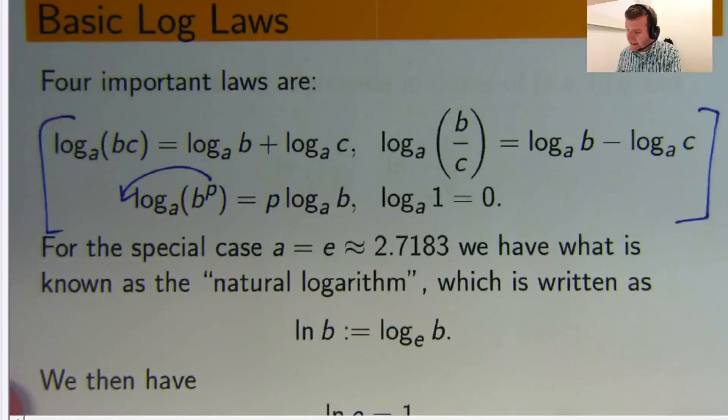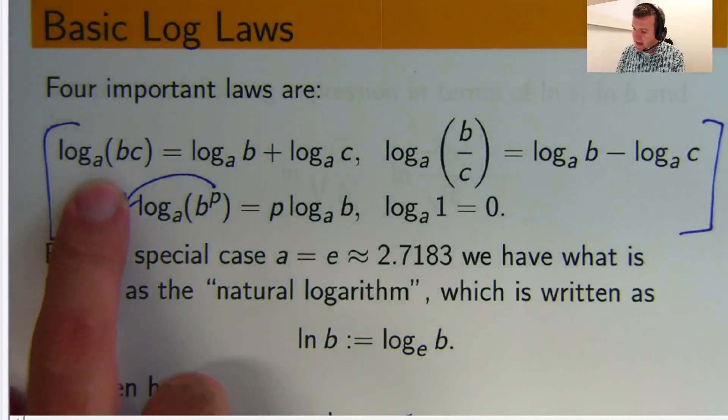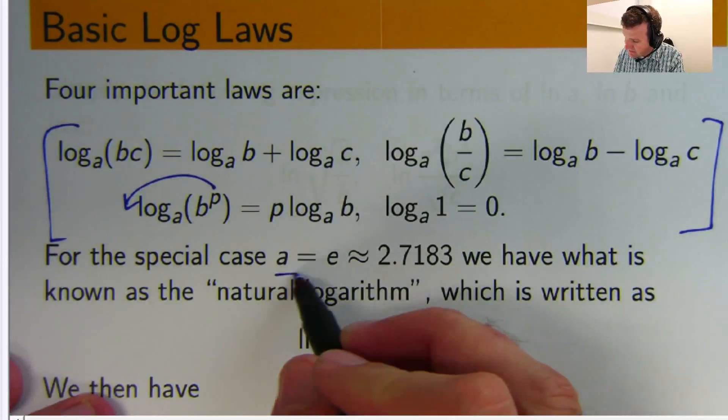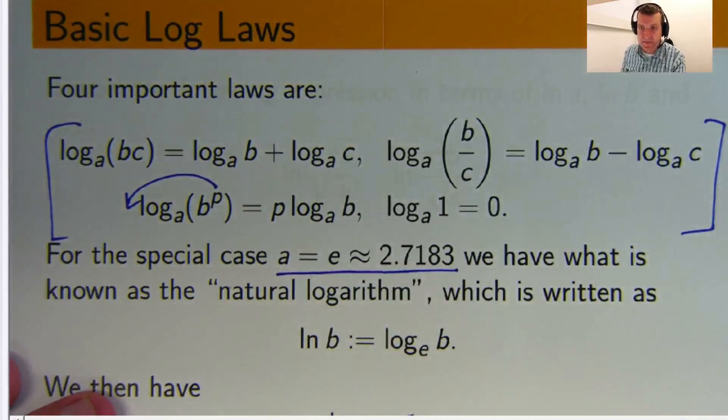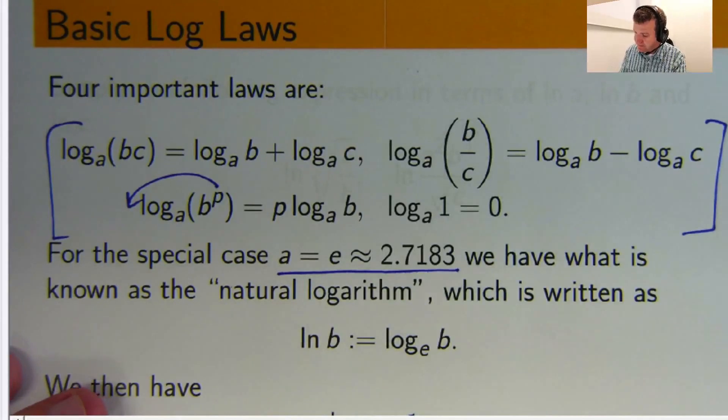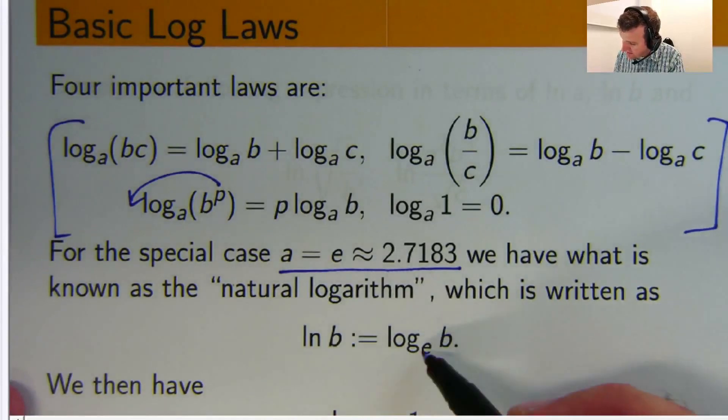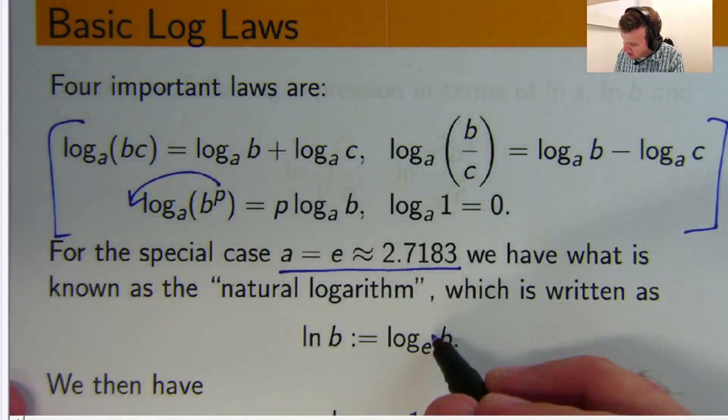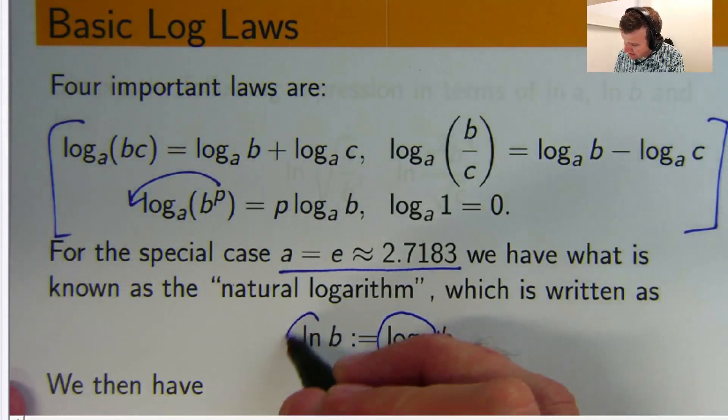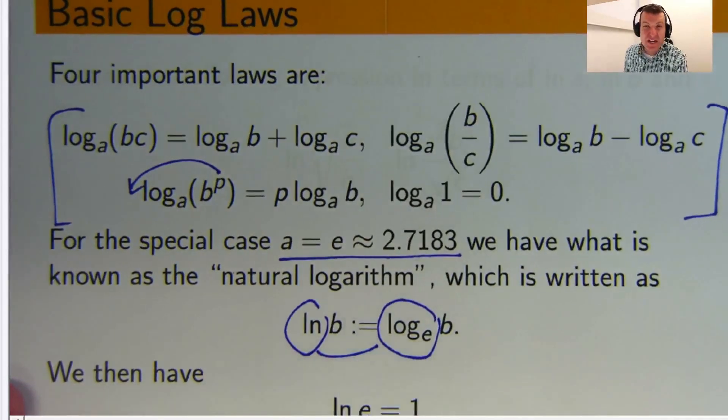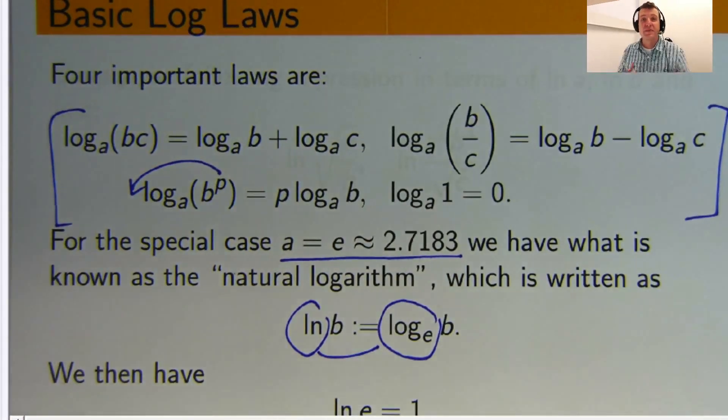So, for the special case when a is this magic number e, which comes from calculus, it's an irrational number. Now, we tend to change the notation a little bit. We write log to base e as ln. So, this gets replaced with this. It's generally... Why do we do that? Well, generally, we don't want to keep writing out log sub e. So, we write ln for natural logarithm.